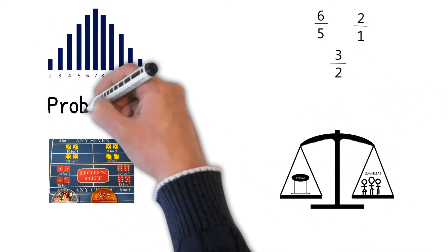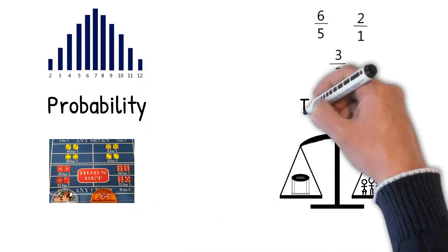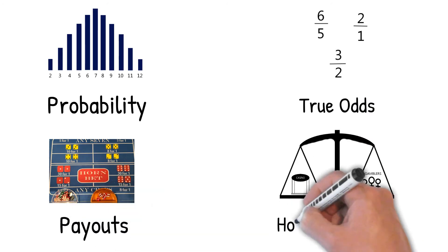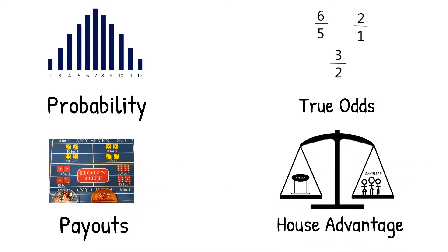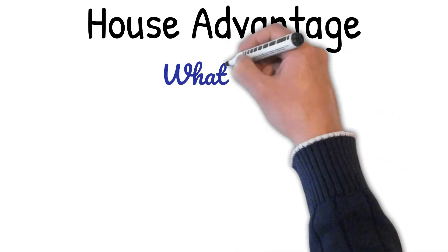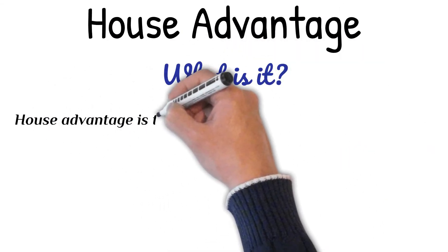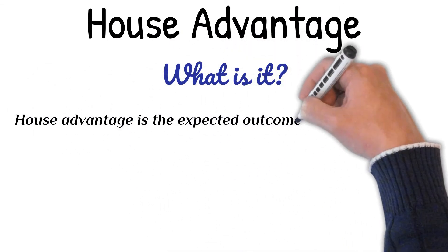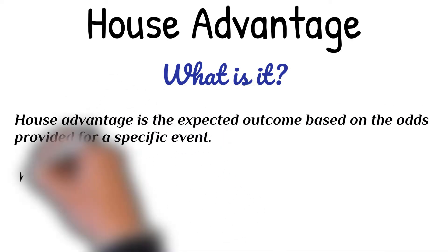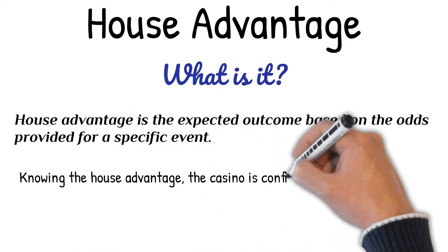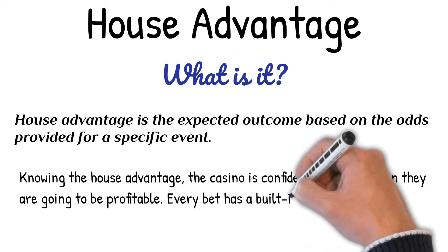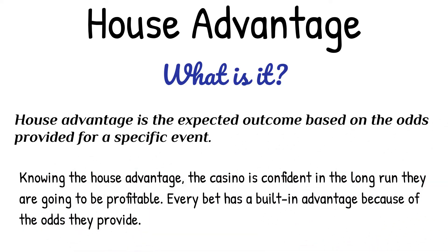Welcome to the Craps Lab. Let's talk about probability, true odds, payouts, and the house advantage. House advantage is the expected outcome based on the odds provided for a specific event. Knowing the house advantage, the casino is confident that in the long run they are going to be profitable — every bet has a built-in advantage because of the odds they provide.